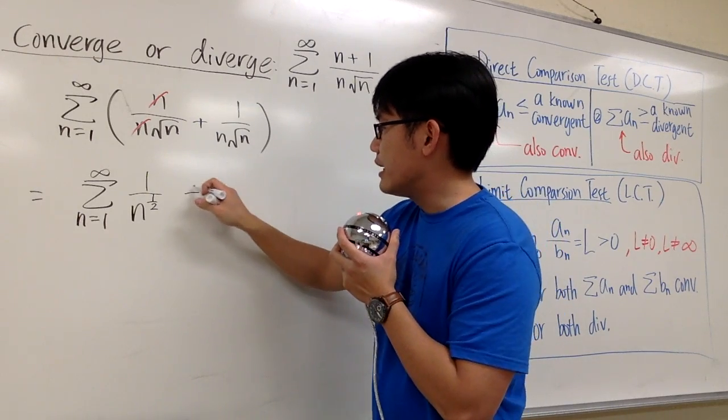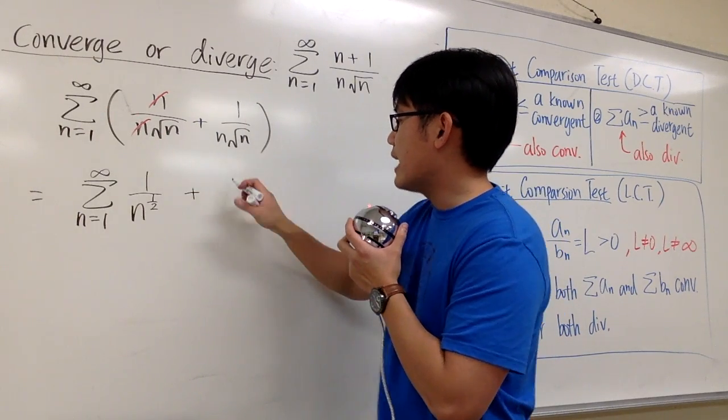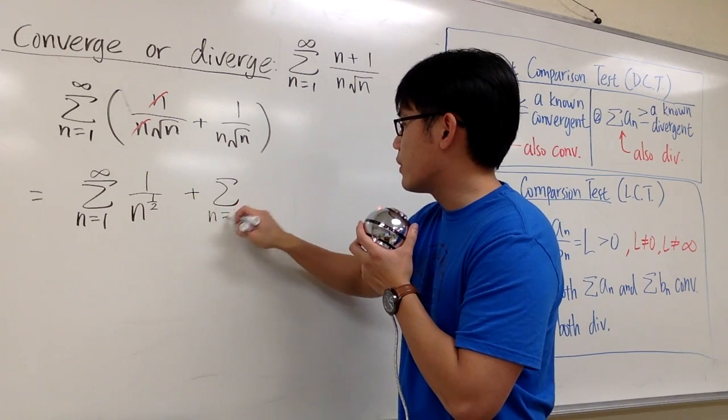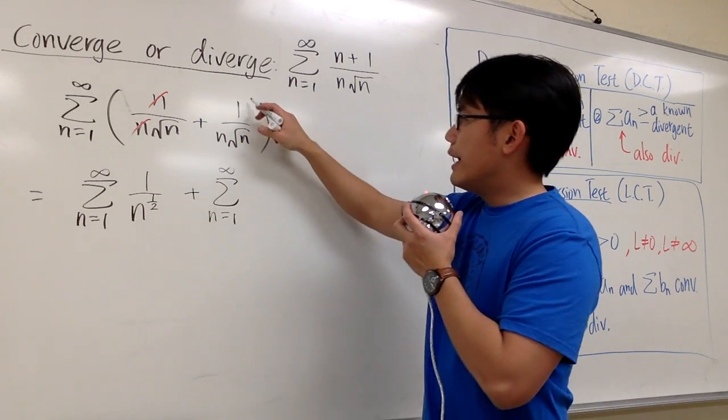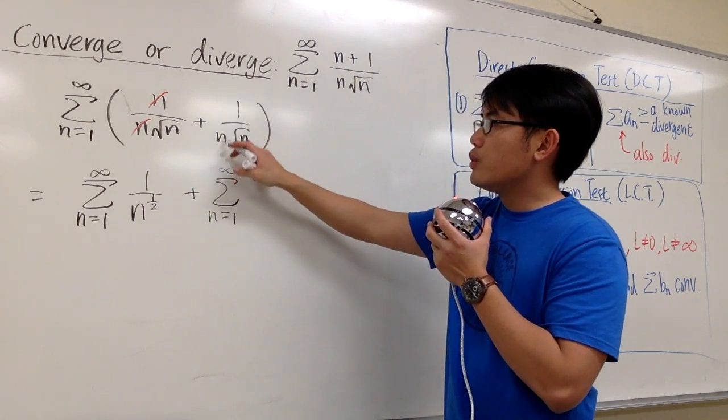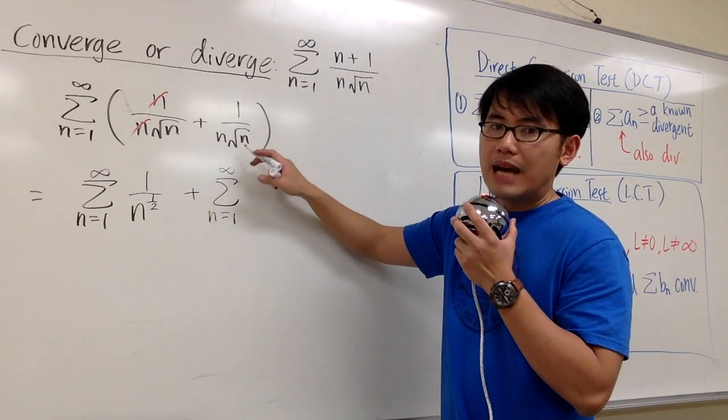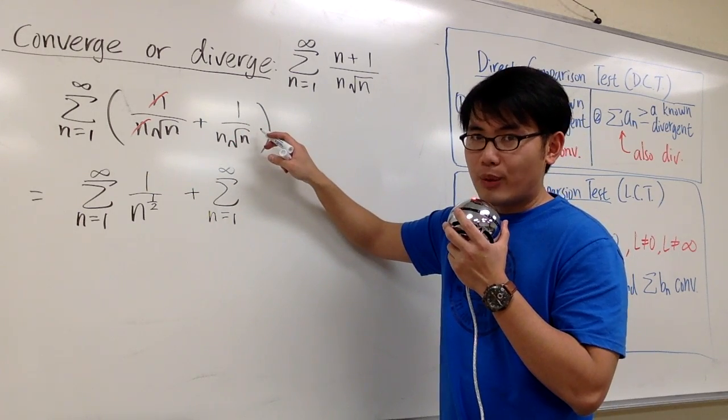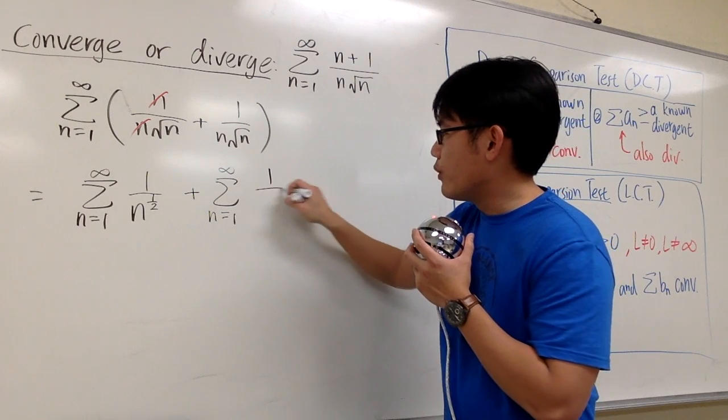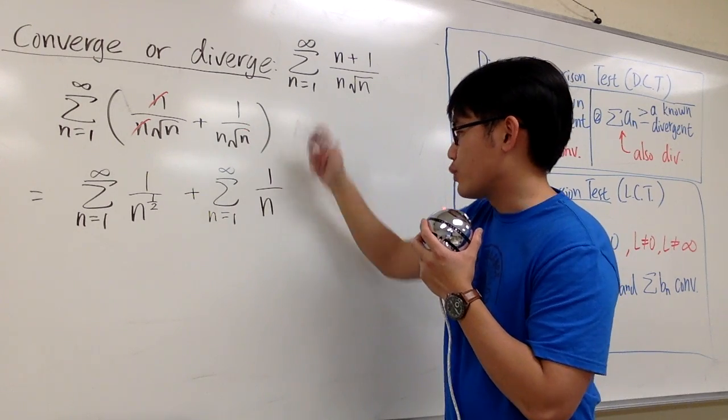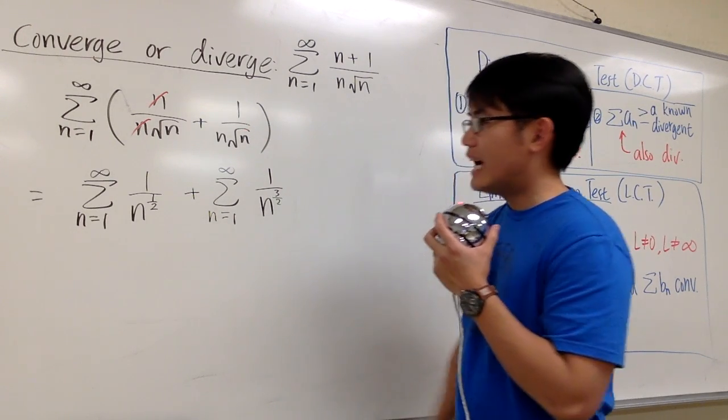And then for the second one, we can just say, let's add sigma of that summation when n goes from 1 to infinity. And this is 1 over n, which is n to the first power, times n to the one-half power. Altogether, this is 1 over n to the 1 plus one-half, which is three-half power.